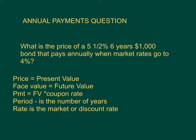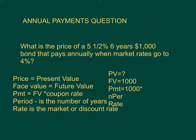For every time value of money question, you're going to go ahead on Excel or on your calculator. You're going to have a PV, an FV, a payment, an end period, and a rate. For this one, we don't know our present value. We know the future value is $1,000. We know our payment is $1,000 times 5.5%, which is going to be $55. Our period is six periods, and our rate is 4%.